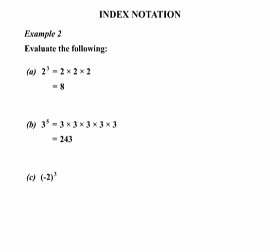Let's look at part C: negative 2 to the power of 3. That minus 2 is in brackets so we don't get our order of operations confused. Our base number is minus 2, and it's a power of 3, so: negative 2 times negative 2 times negative 2. Negative times a negative gives us positive, so negative 2 times negative 2 equals positive 4. Then times by that minus 2 on the end, we get minus 8 — or negative 8 — as our answer. Be really careful not to mess up that negative at the end.